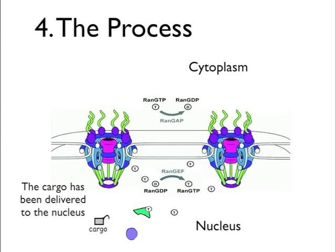These import complexes cannot reform within the nucleus, because as long as there is a high concentration of RAN-GTP, importin beta will not be able to bind again with importin alpha. If the two are not bound together, they won't be able to recognize the nuclear localization signal present in the cargo.